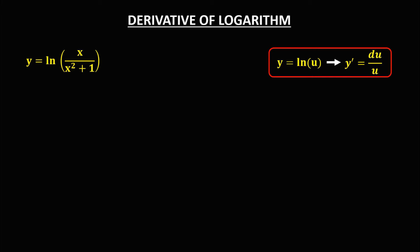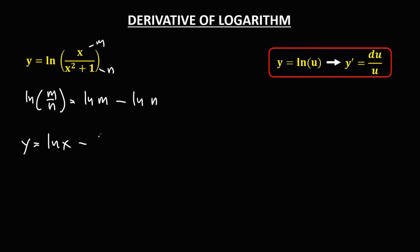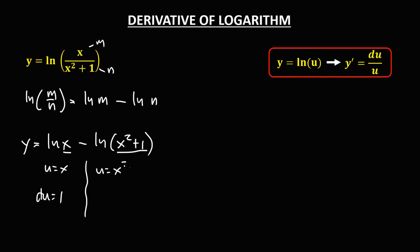For the next given, we use the logarithm property that ln(m over n) equals ln m minus ln n. So y equals ln x minus ln(x squared plus 1). We find the derivative for each term. For the first term, u equals x and du equals 1. For the second term, u equals x squared plus 1, and du equals 2x.